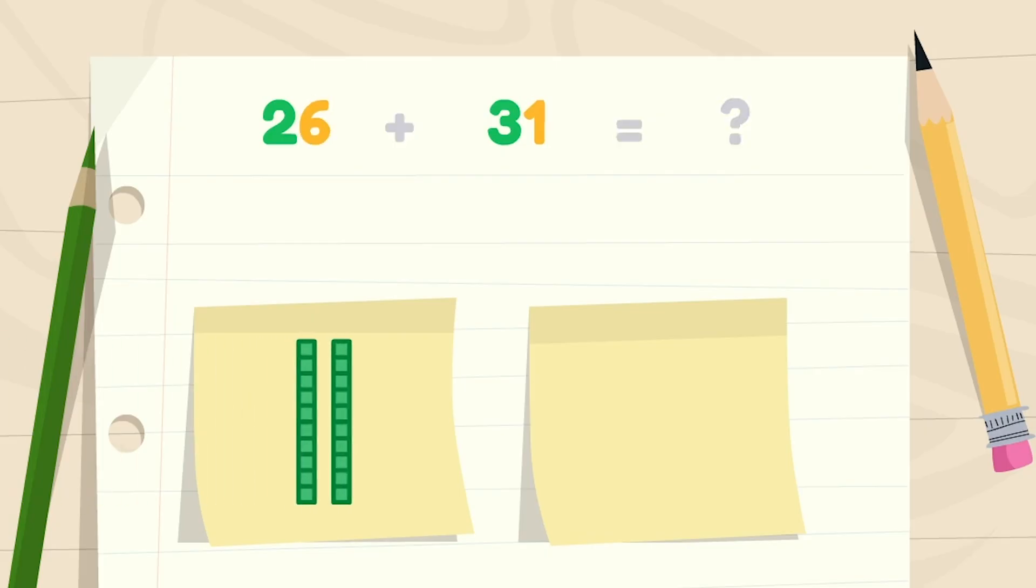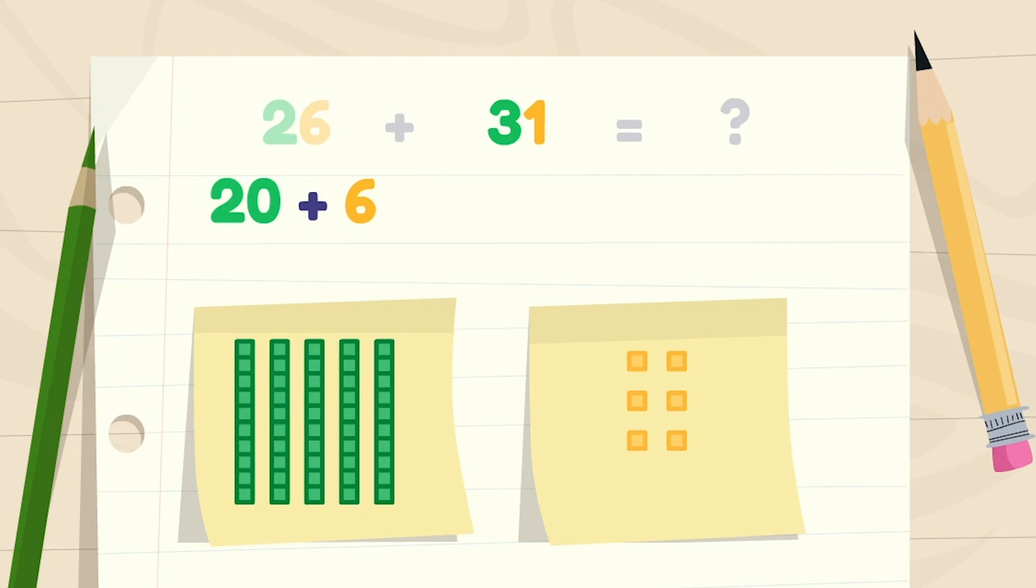There are two tens and six ones in the number 26. Two tens and six ones. There are three tens and one one in the number 31. Three tens and one one. Super!